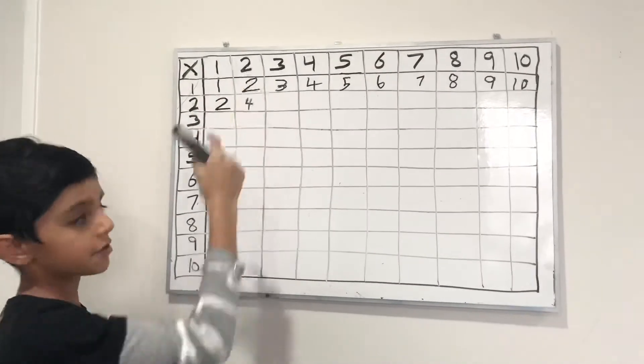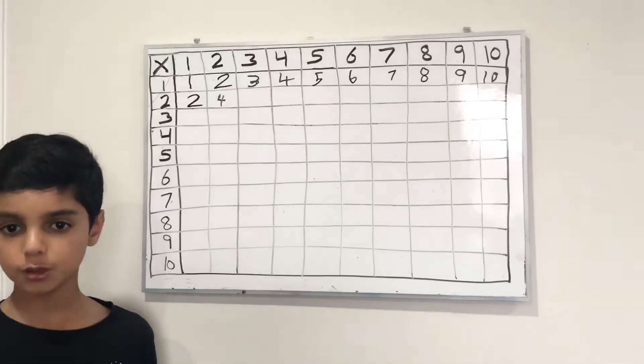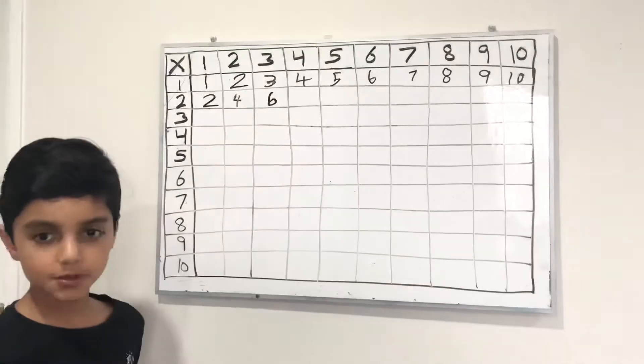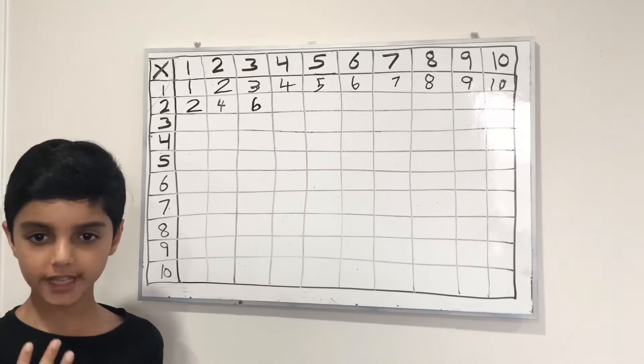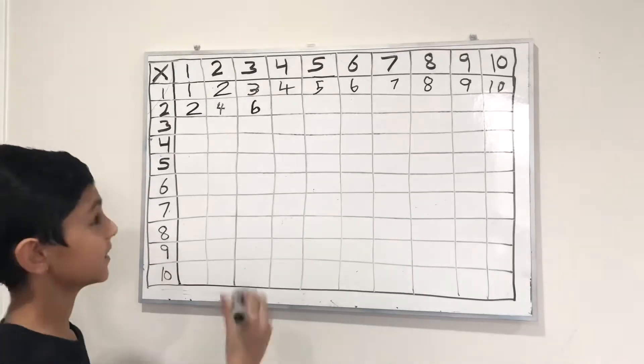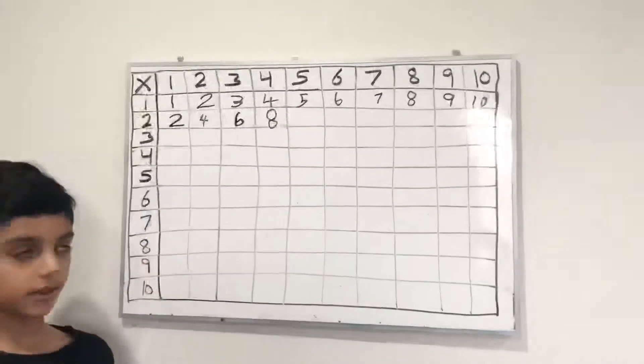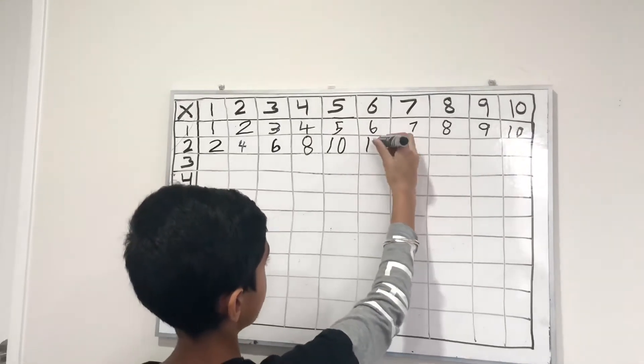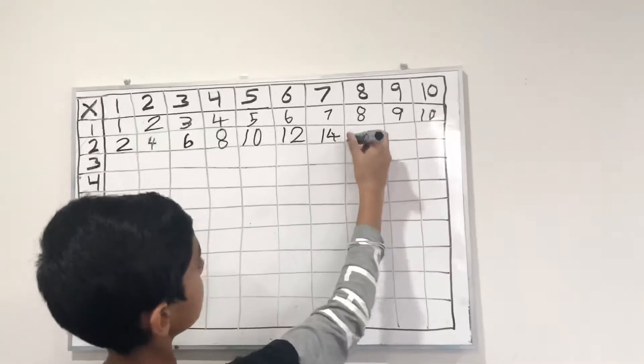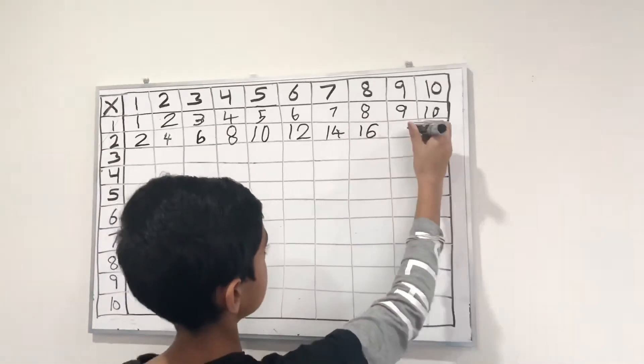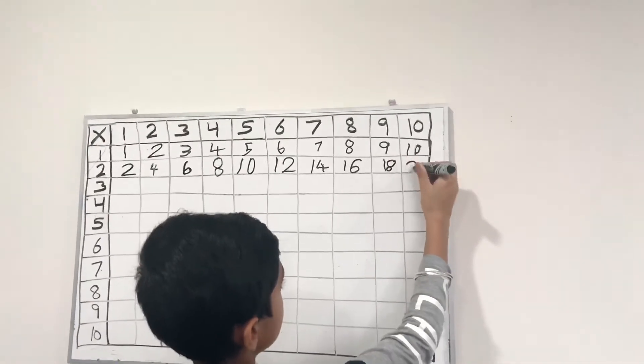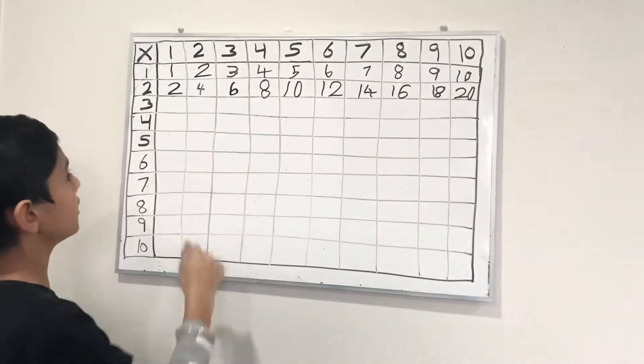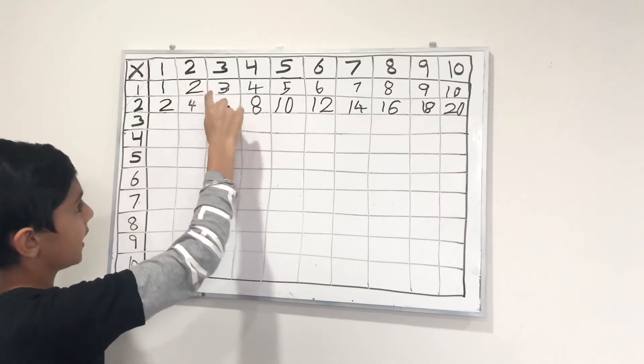2 times 3 is basically 2 plus 2 plus 2, which is 6. 2 times 4 is basically adding 2 four times, which is 8, and the rest is 10, 12, 14, 16, 18, 20. Can you see a difference of 2 in each number? Like 2 plus 2 is 4, and these keep on adding 2.